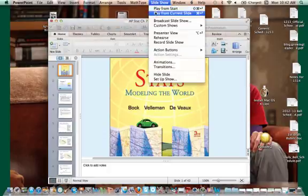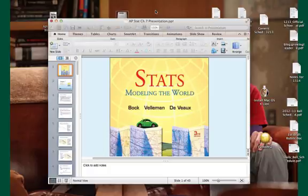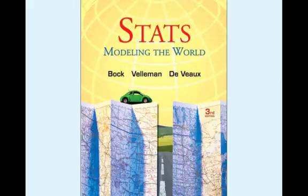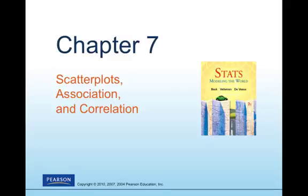Welcome. This is Chapter 7 for AP Statistics, video number one. Today we're going to start talking about bivariate data — data that occurs in pairs, where you have two measures for each individual. In Chapter 7, we're going to talk about scatterplots, association, and correlation.